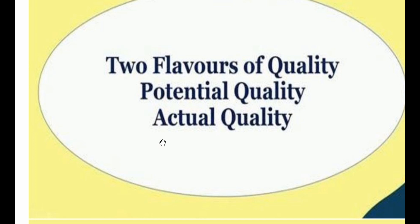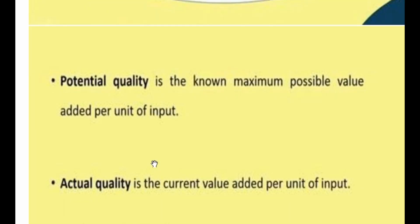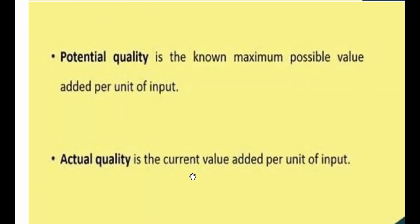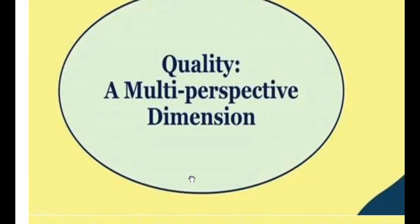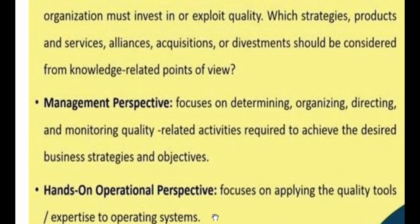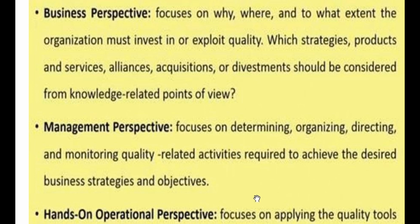There are two flavors of quality: potential quality and actual quality. Potential quality is the known maximum possible value added per unit of input. Actual quality is the current value added per unit of input. Quality is also a multi-perspective dimension. The business perspective focuses on why, where, and to what extent the organization must invest in quality, and which strategies, products, services, alliances, or acquisitions should be considered. The management perspective focuses on determining, organizing, directing, and monitoring quality-related activities to achieve desired business strategies and objectives.